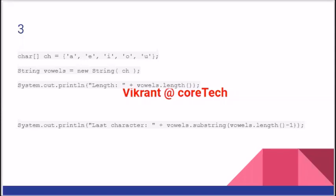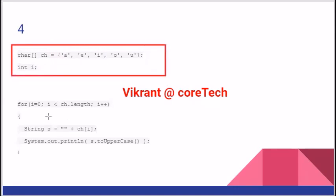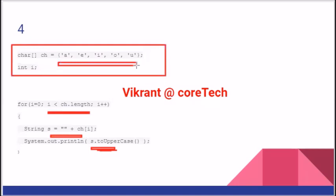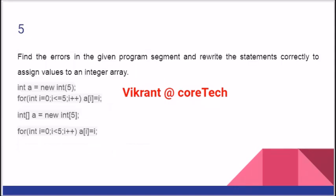Let us see the next question. There is a character array with A, E, I, O, U using a loop, storing it in a string. This is converting it into uppercase. So all the A, E, I, O, U, instead of being in small case, will be in uppercase letters.